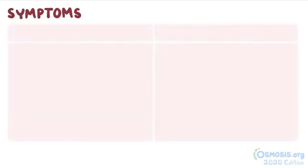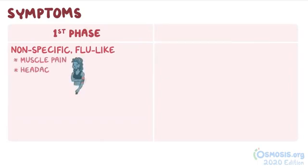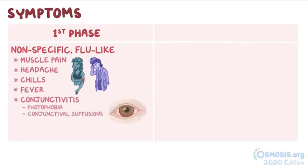Symptoms of leptospirosis depend on the phase of the infection. In the first phase, there are nonspecific flu-like symptoms like muscle pain, headache, chills, and fever. With conjunctivitis, there may be photophobia and conjunctival suffusions, which is when the eyes gradually become red, but there's no tearing or discharge.